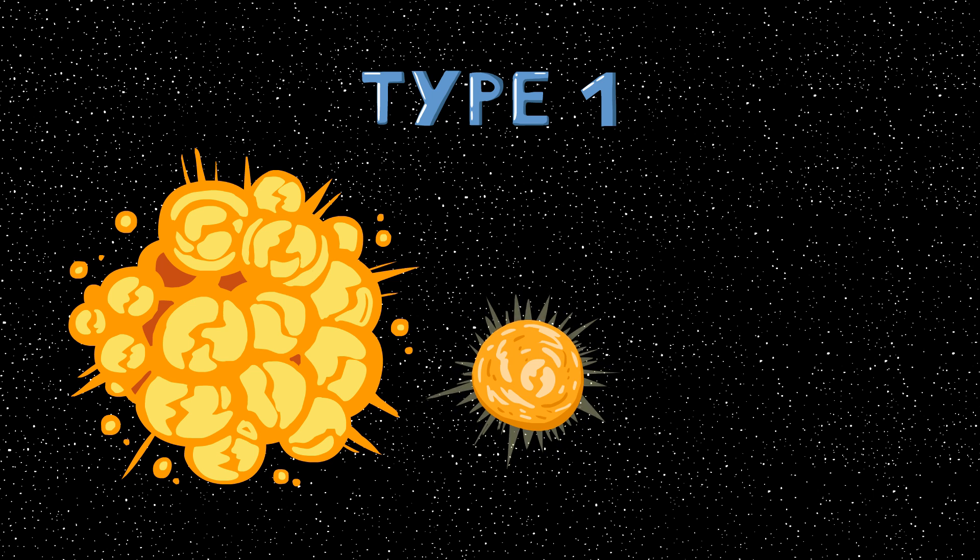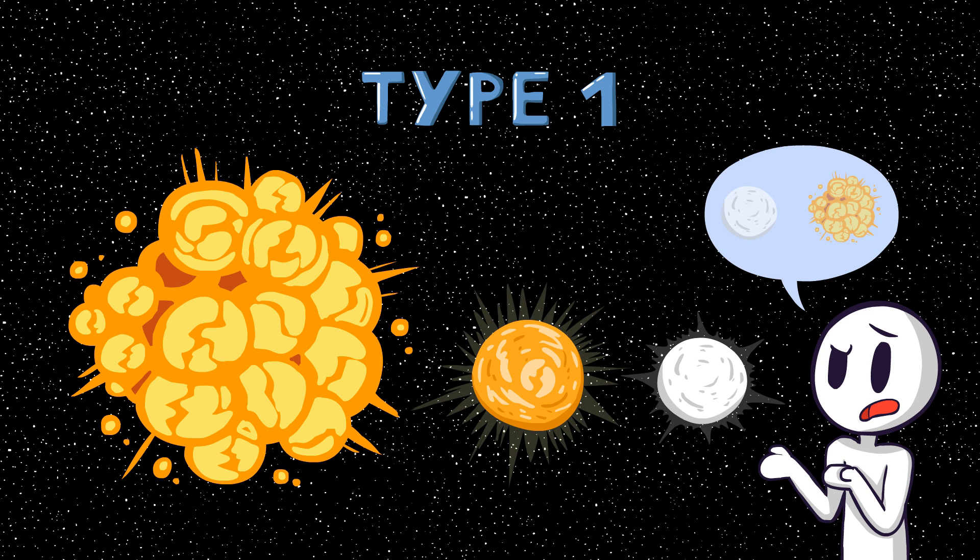They are not caused by the death of a very large star. What? Instead, they are caused by a white dwarf exploding. Hold on a second. White dwarfs shouldn't explode. They just slowly die until the end of time, right? Yeah! Unless they are part of a binary star system.